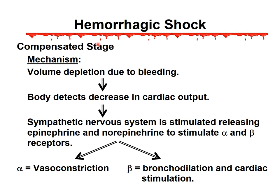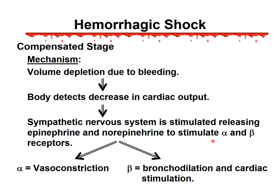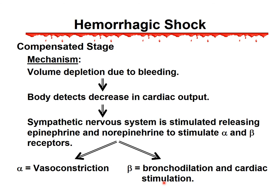In the compensated stage of hemorrhagic shock, when volume depletion occurs, the body detects the decrease in blood pressure and cardiac output, increasing sympathetic nervous system activity and releasing epinephrine and norepinephrine to stimulate alpha and beta receptors. This causes peripheral vasoconstriction — which is why cold extremities are the hallmark — and bronchodilation and tachycardia develop due to sympathetic stimulation.